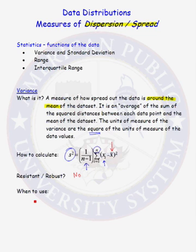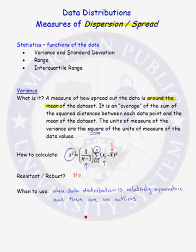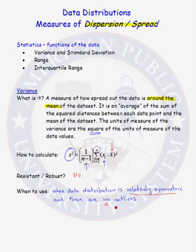When should you use the sample variance as your measure of dispersion? You should use the sample variance when the data distribution is relatively symmetric and there are no outliers in your data set. If there are outliers, variance is not a resistant statistic, so you do not want to use it.